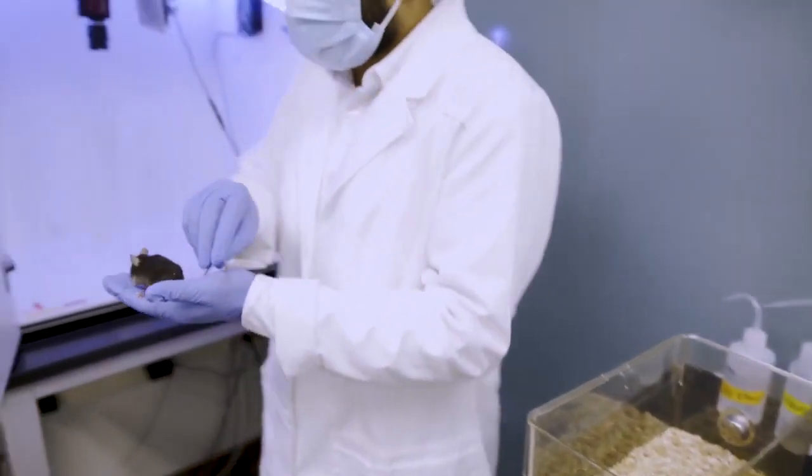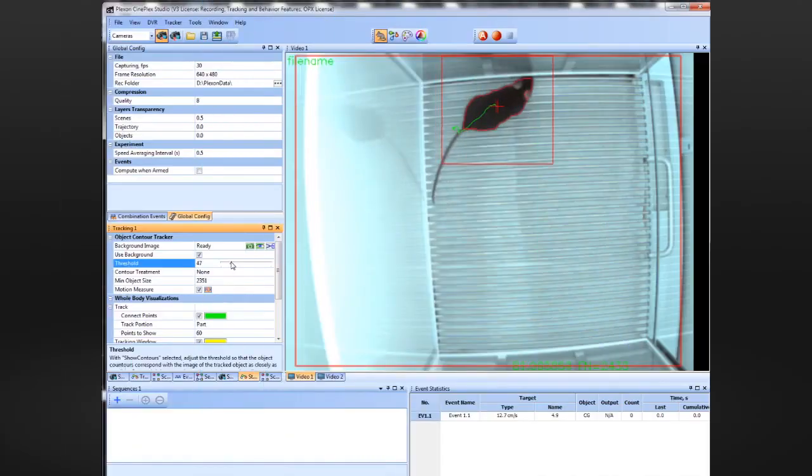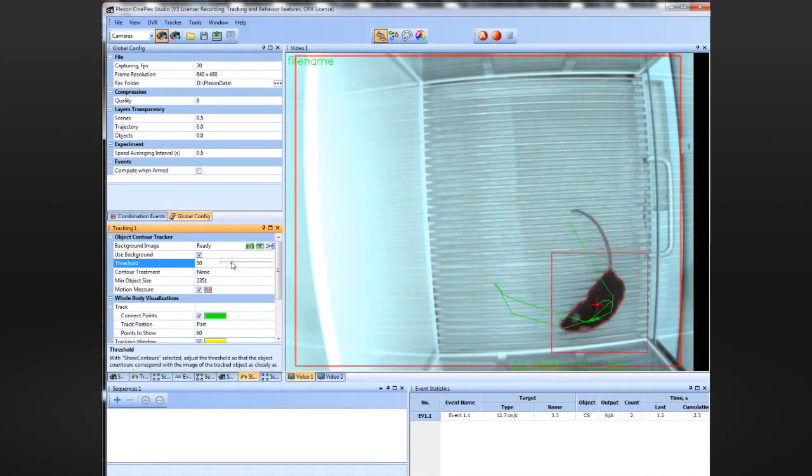To set up the software tracking, place a test mouse in each relevant context, define the center of gravity, and adjust the contour size.